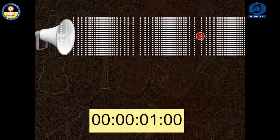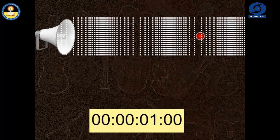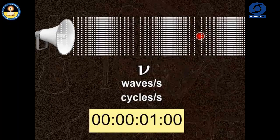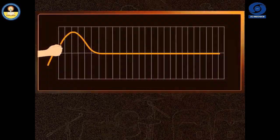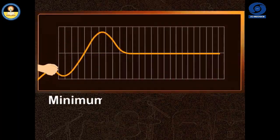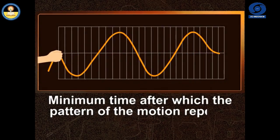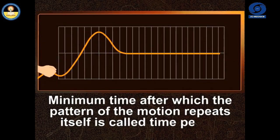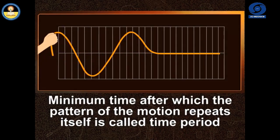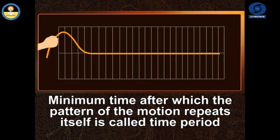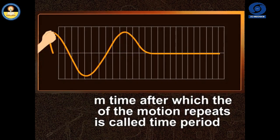It is usually represented by Greek letter nu and its unit is waves per second or cycles per second. On the other hand, the minimum time after which the pattern of the motion repeats itself is called time period of the wave.